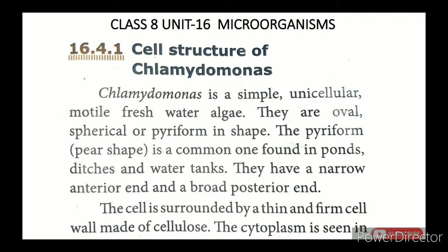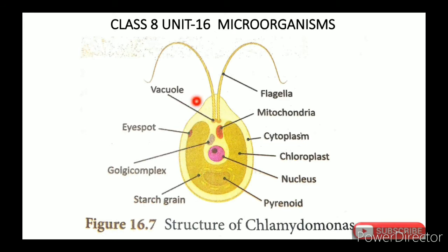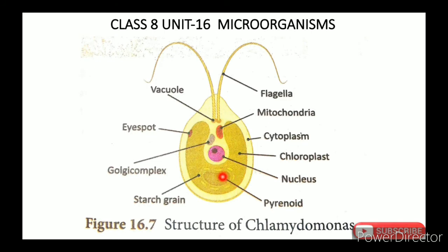The Chlamydomonas cell structure: it has a cellulose cell wall and a cell membrane. Inside there is a nucleus, and the chloroplast is cup-shaped. The cytoplasm is visible between the membrane and chloroplast. The front part is narrow and the back side is broad. At the front there are two flagella, and near the flagella there are vacuoles. Next to the chloroplast on both sides there is a red-colored eye spot.